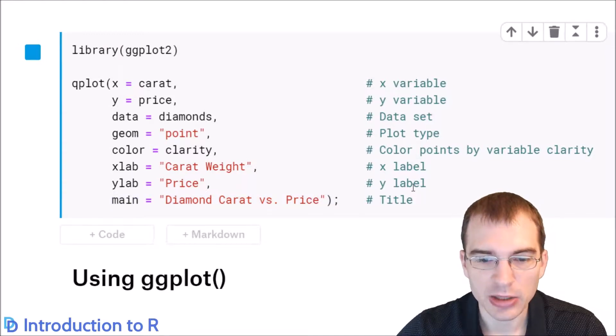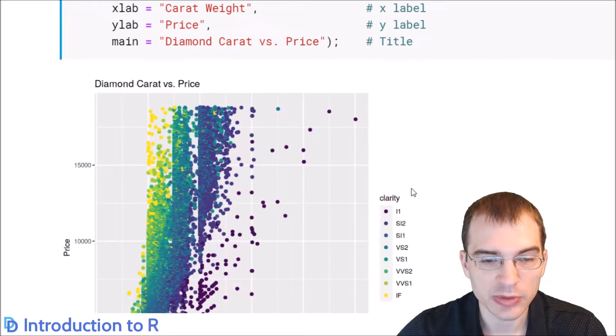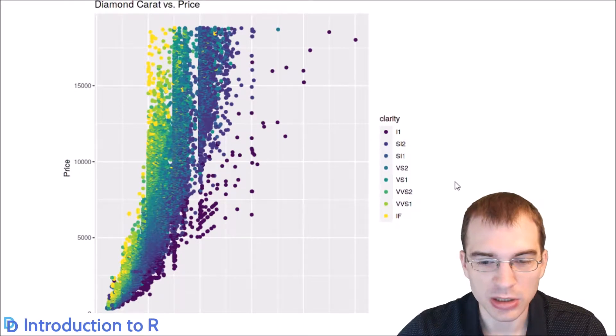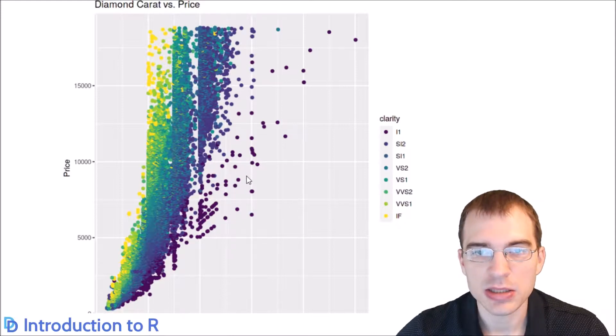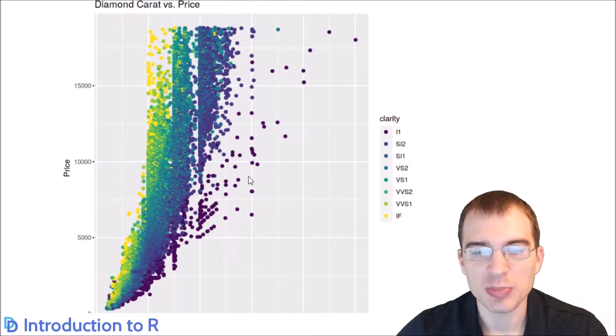We're going to label the x and y axes and give a title. This will create a plot quite similar to the scatter plot we made with base R in the last video, but the points have been colored by the clarity level. qplot is a nice way to make a quick plot for exploratory analysis, but if you're doing anything more substantial with ggplot2, you're going to want to use the ggplot construction.